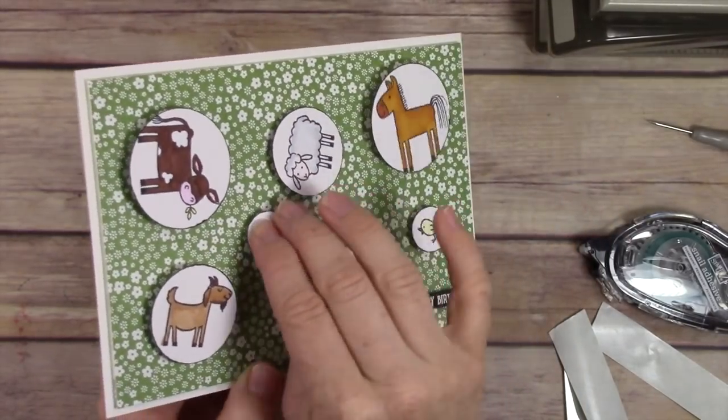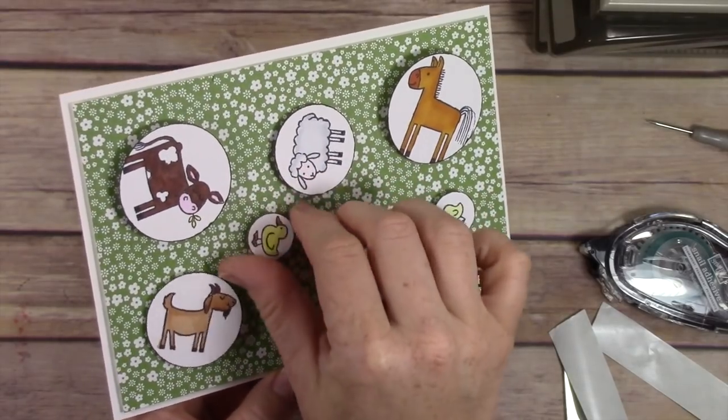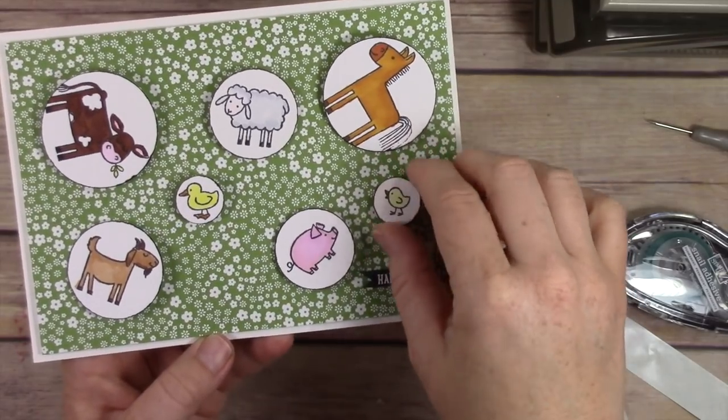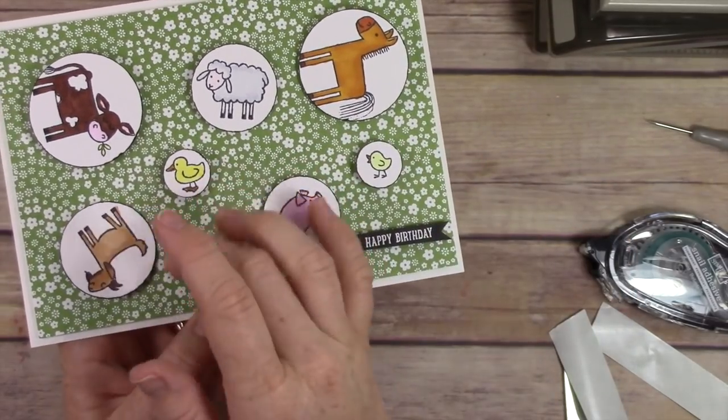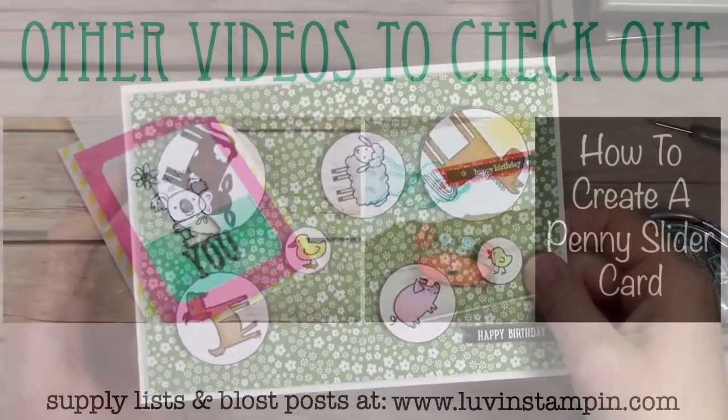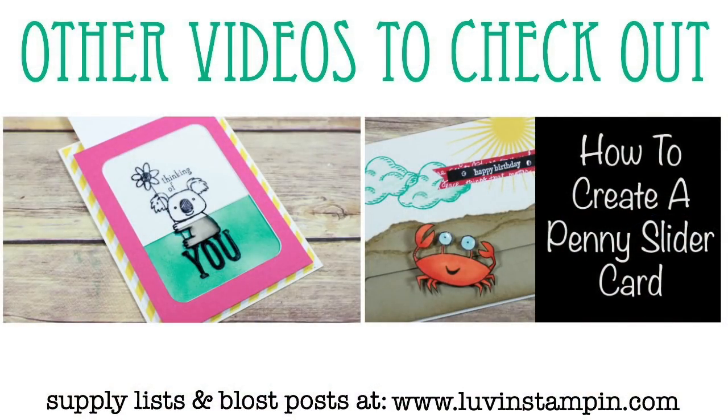The little chicken and duck don't spin as freely, but the bigger animals spin super easy, and I just love how this card turned out. If you want more interactive card video tutorials, you can click on either one of these—one is the Color Magic card and the other's a Penny Slider card. I would love it if you liked this video, gave me a thumbs up, and subscribed to my YouTube channel. I hope you have a fantastic day. Thanks for watching, bye bye!